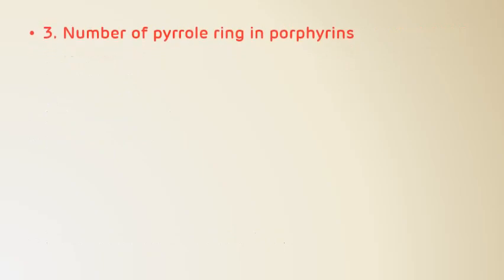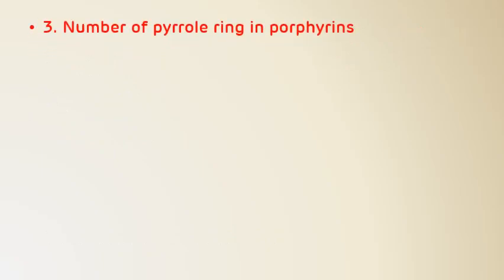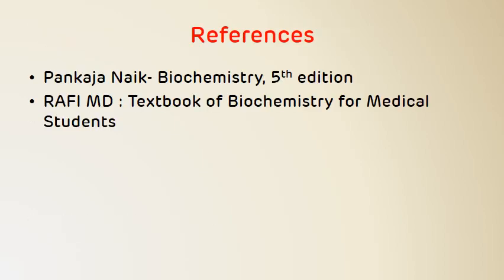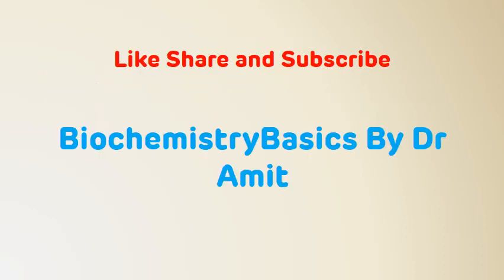The third multiple choice question: 'Number of pyrrole rings in porphyrin?' The options are 2, 3, 4, and 1. The answer is 4 — four pyrrole rings are present in the structure of porphyrin. These are the references for the video. Please like, share, and subscribe to Biochemistry Basics by Dr. Amir. Thank you.